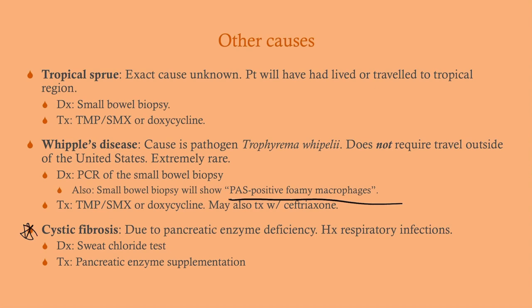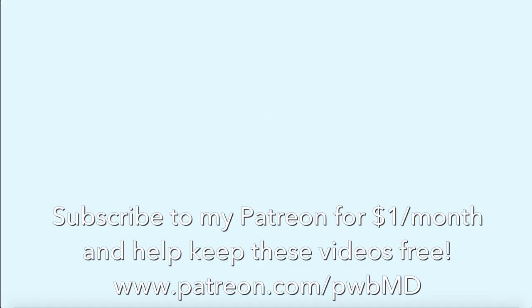Cystic fibrosis will probably be given to you as a child with repeated pulmonary infections, but you could get it in the context of a GI case with malabsorption and steatorrhea. These patients are deficient in pancreatic enzymes — they're unable to get those enzymes into the intestine. Look for a two- to three-year-old with failure to thrive, salty and sweaty, who has had multiple pneumonias and now has diarrhea. Diagnosis for cystic fibrosis is a sweat chloride test; treatment for GI issues is pancreatic enzyme supplementation. Because we test for CF so early, this probably won't present as a malabsorption case, but know that it can happen.